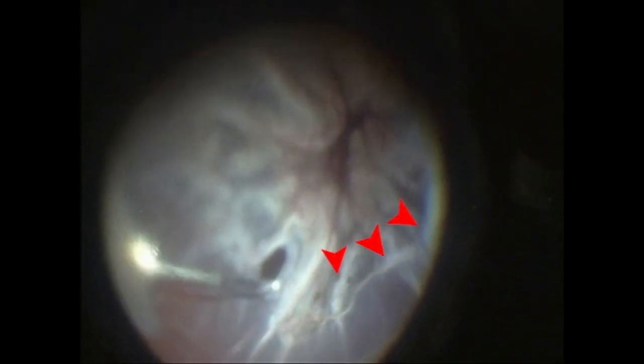The break is at the posterior margin of the vitreous base, an area of strong vitreo-retinal adhesion. It may be difficult to separate these membranes from the retina.